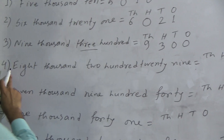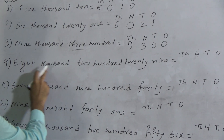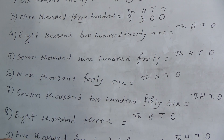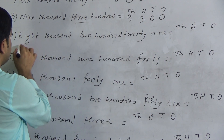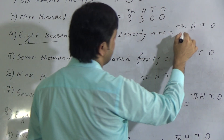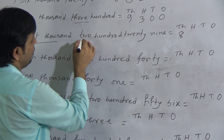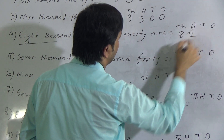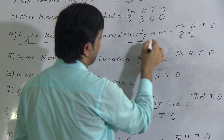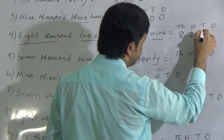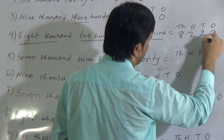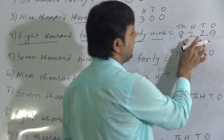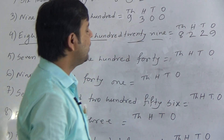Next number: eight thousand two hundred and twenty-nine — 8229. As here is 8000, we write 8 below thousands. Then 200, so we write 2 below hundreds. To write 29, we write 2 in tens position and 9 in ones position. All places are filled by digits, so no need to put any 0 here.